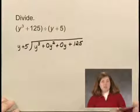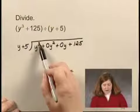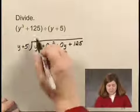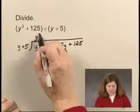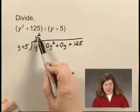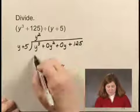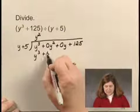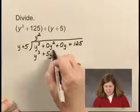Now to divide, I think y cubed divided by y is y squared. So I write y squared up in the quotient. Then I multiply y squared by y plus 5. That gives me y cubed plus 5y squared.